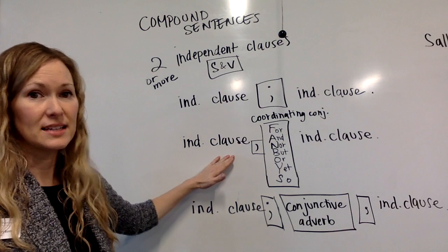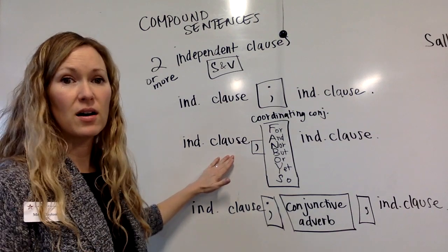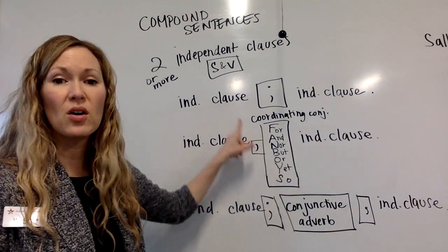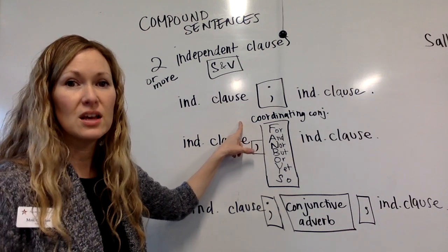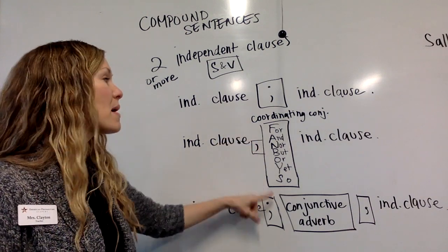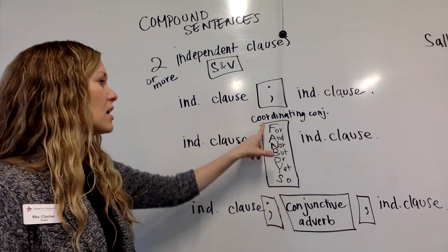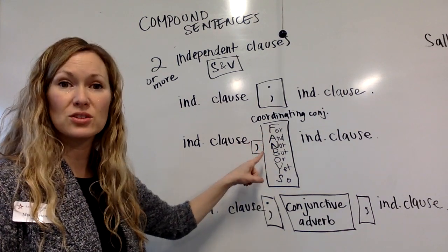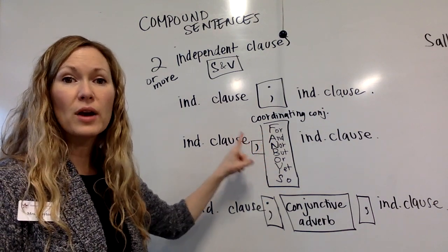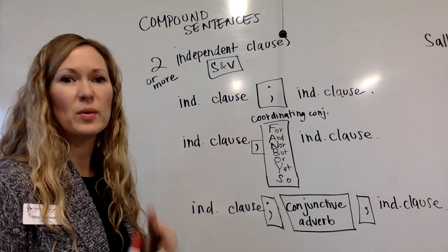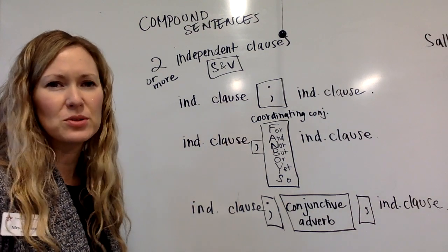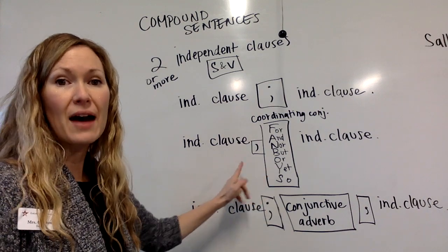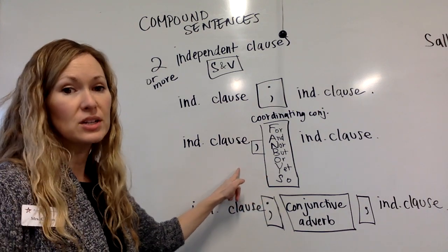The next way that we can identify a compound sentence is from one of our FANBOYS, which we call coordinating conjunctions. A way we remember coordinating conjunctions is FANBOYS: for, and, nor, but, or, yet, so. It's just one easy way to remember. So it's only going to be one of those after a comma — those are our coordinating conjunctions.